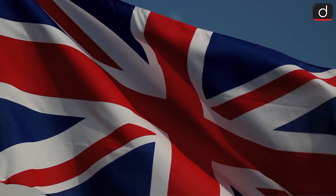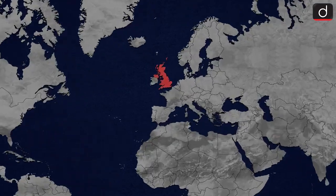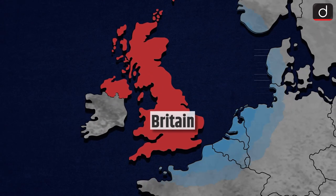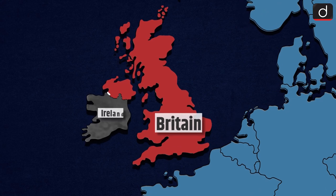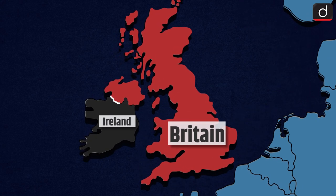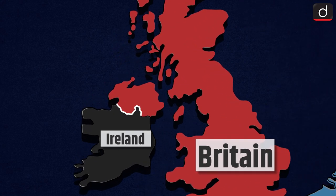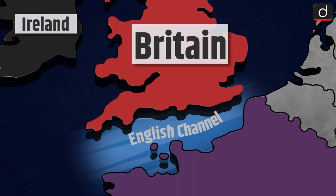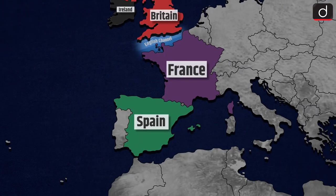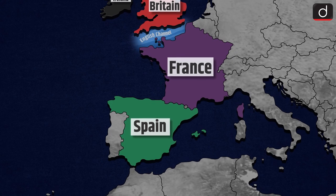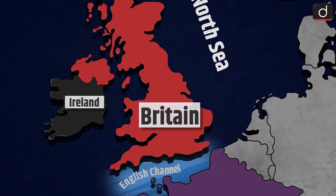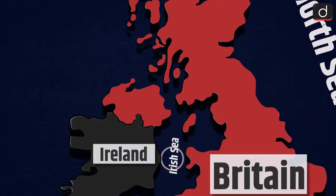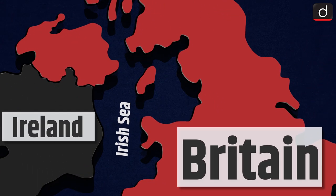But first, let us know about Britain. Britain, which at one time ruled most of the world, is located in the northwest part of Europe. It does not share its terrestrial border with any country other than Ireland. However, it shares a close water border with France and Spain through the English Channel. It is bordered by the North Sea in the east, the Atlantic Ocean in the north, and the Irish Sea in the west.